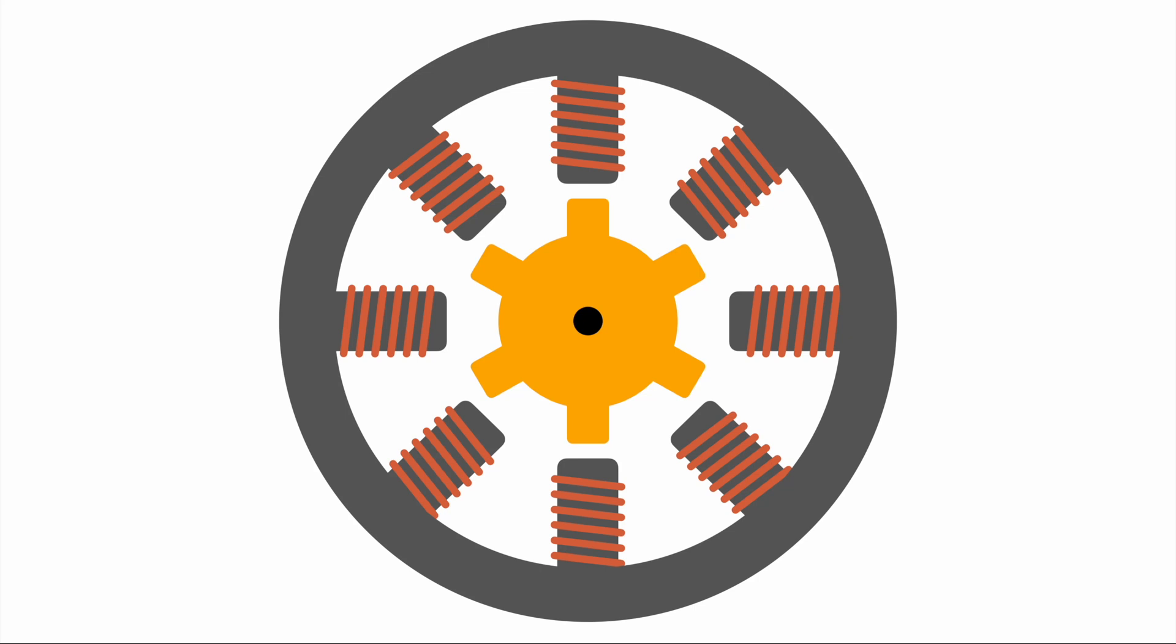The way the stepper motor works is it's having basically a different amount of solenoids on the outside in the stator than it has little pins in the inside on the rotor. Thereby the little pins can never align perfectly with the solenoids on the outside. So some can align perfectly but not all at the same time.